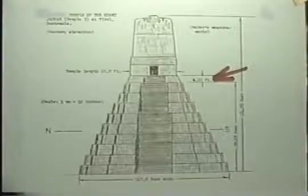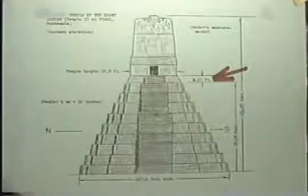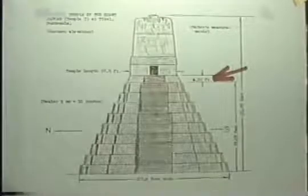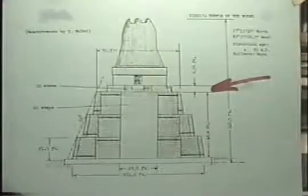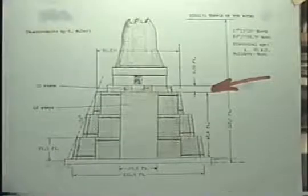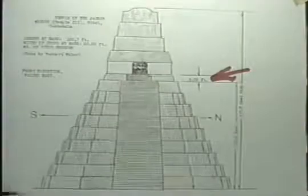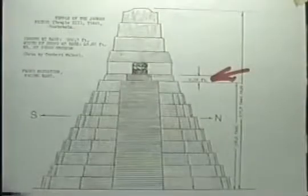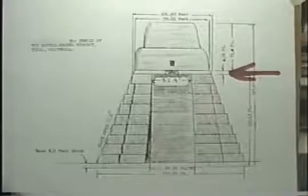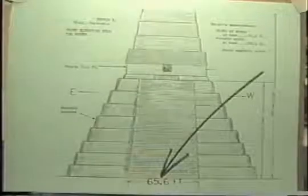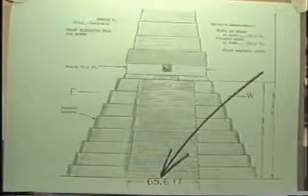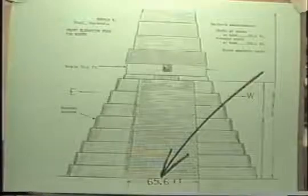The same is true of Temple 2, the Temple of the Masks. Temple platform is 6.56 feet high. And on Temple 3, Temple of the Jaguar Priest. And on Temple 4, the Temple of the Double-Headed Serpent, 6.56 feet. Mallor apparently did not measure it on Temple 5, though he did find the numbers when he measured the width of the staircase at ground level, 65.6 feet.